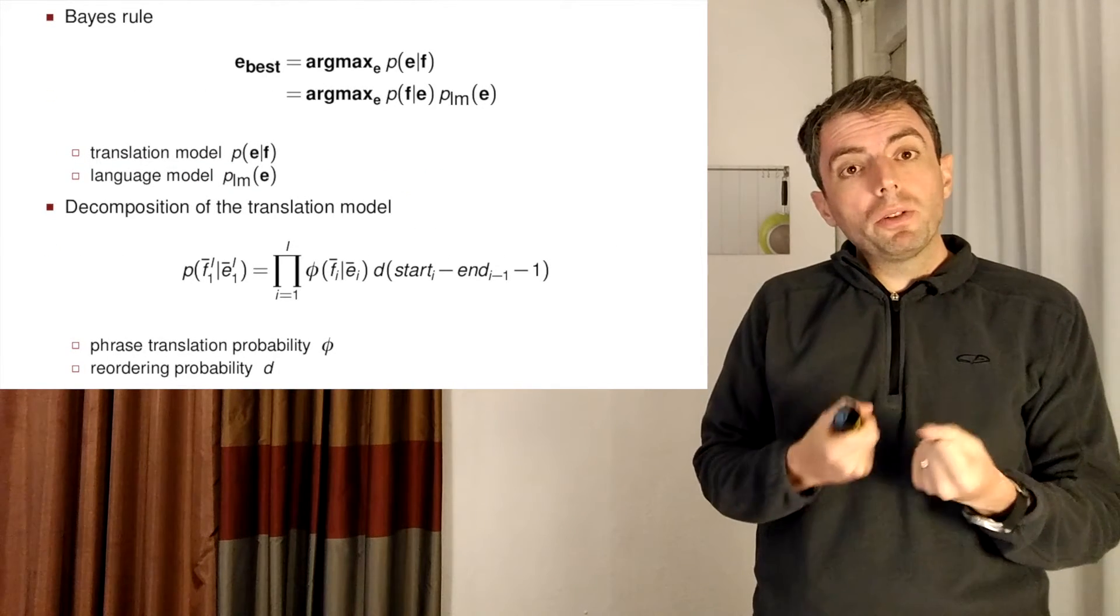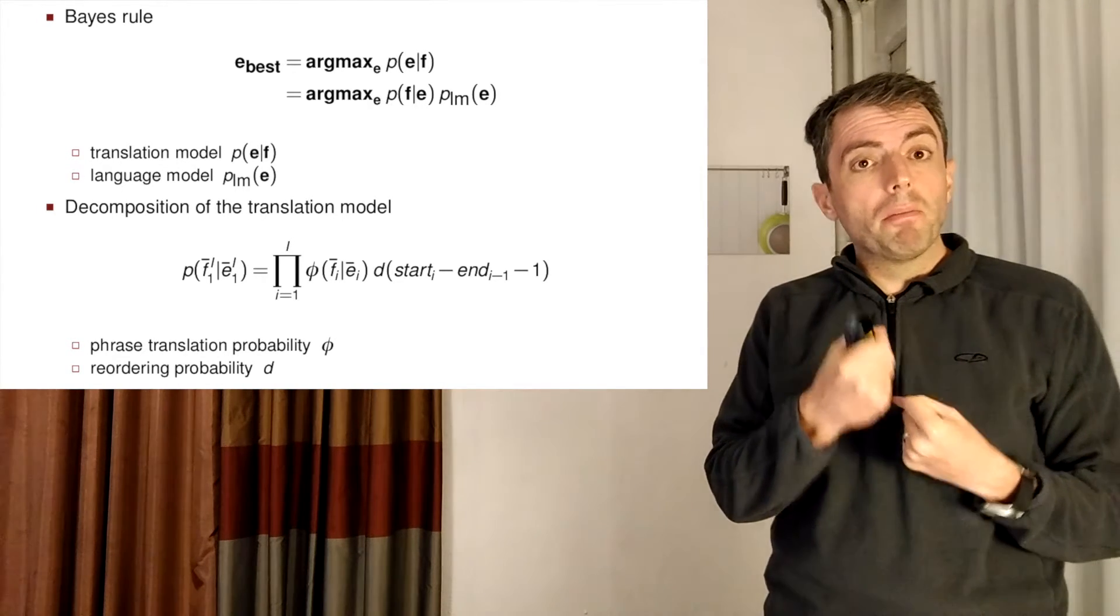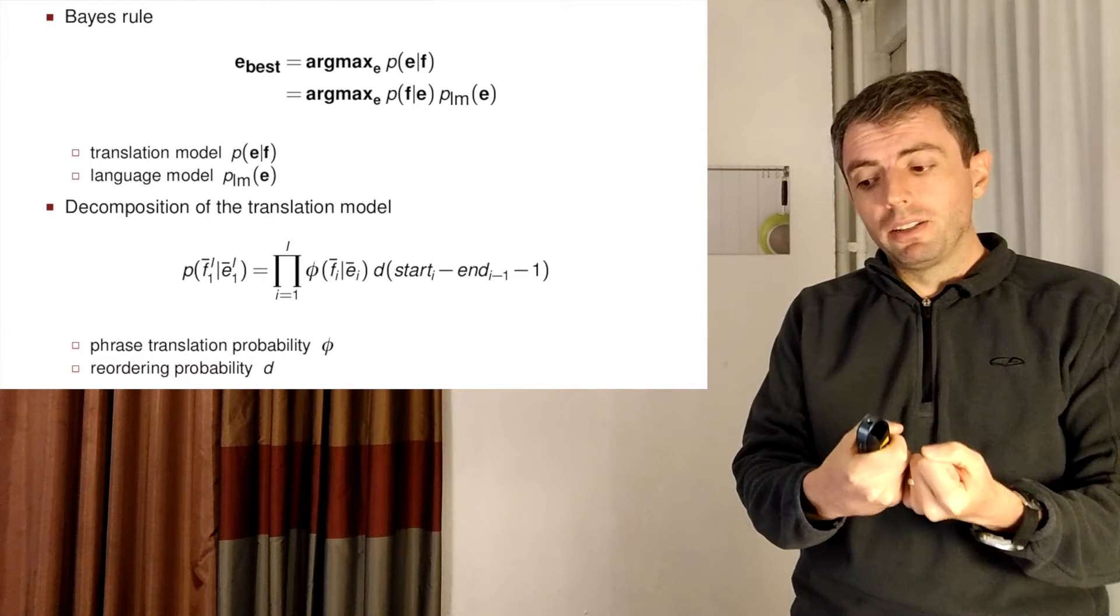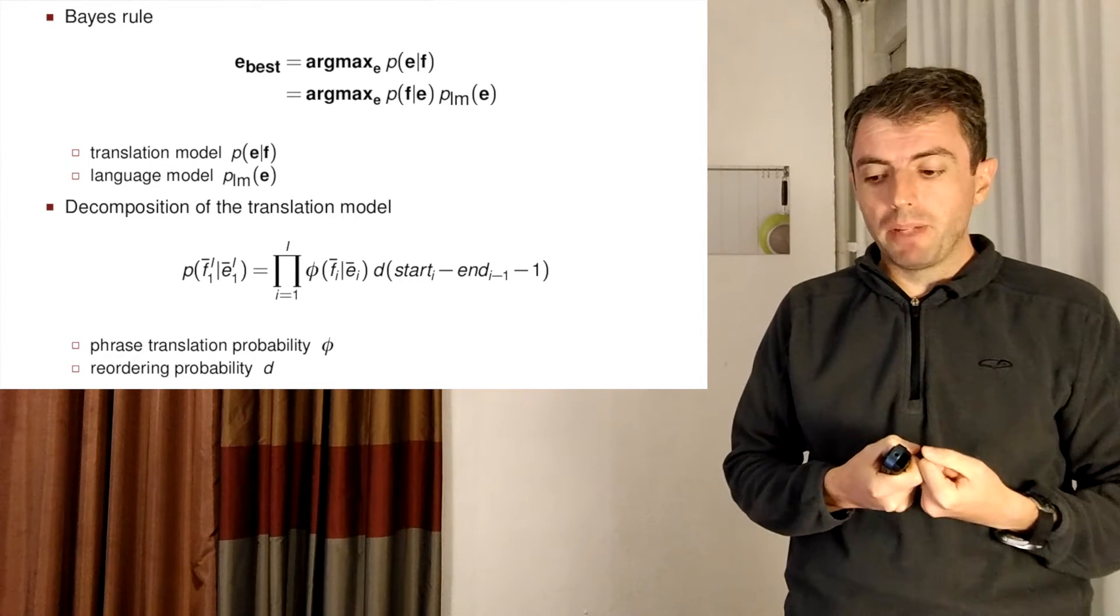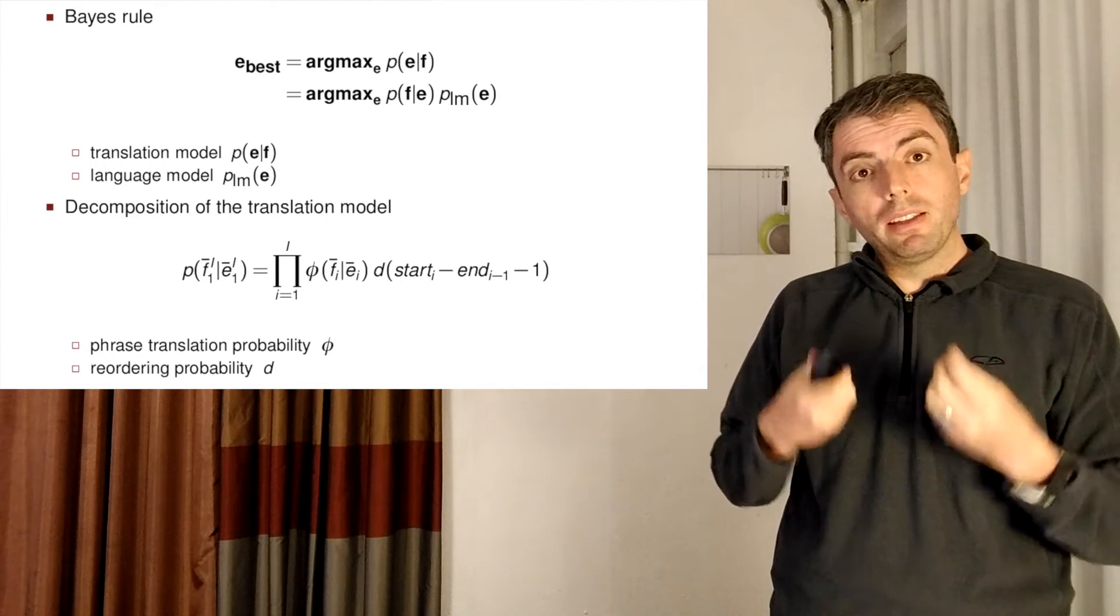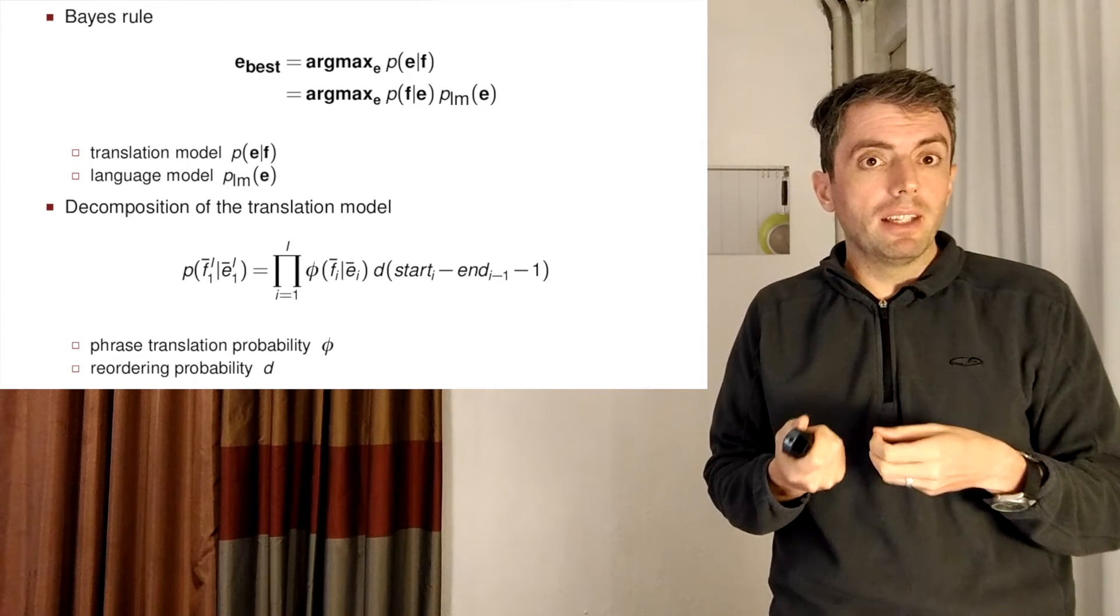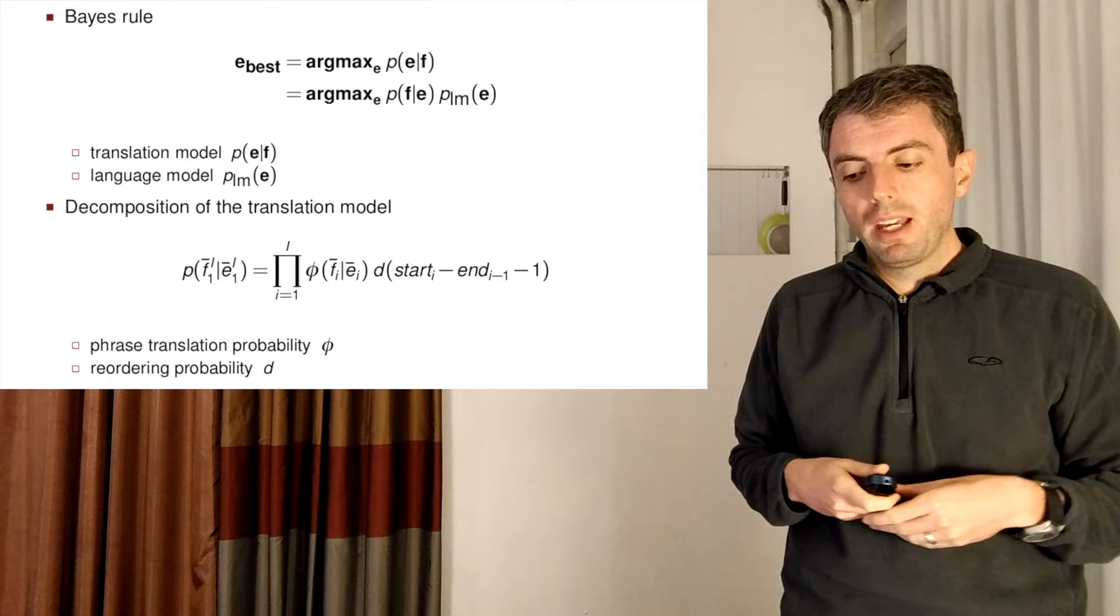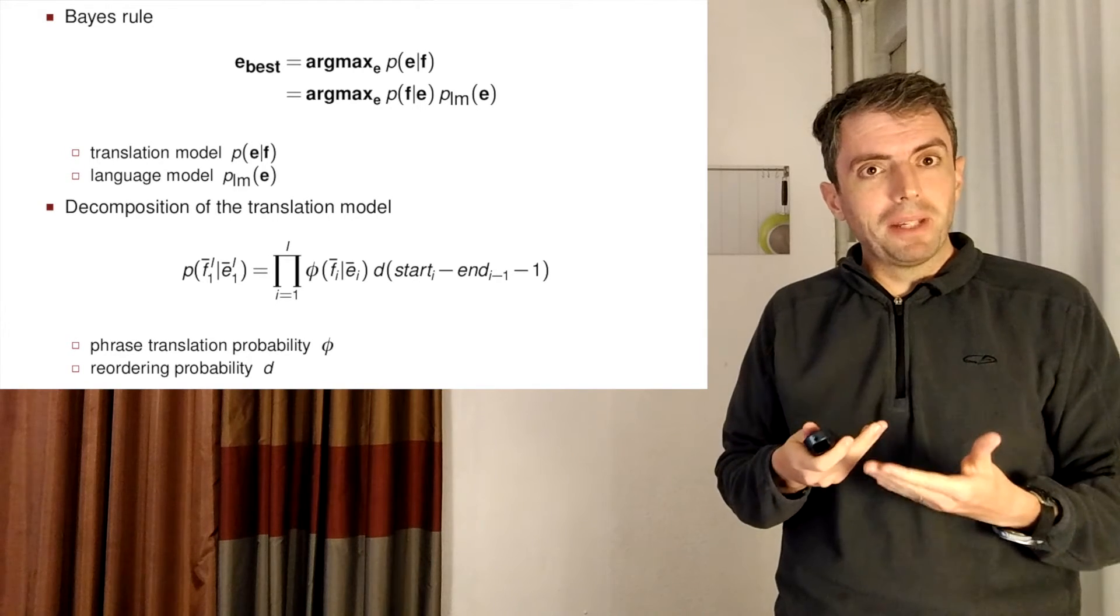So how do we actually tie this all together into a single model? The way that we do this is we combine the probability from the phrase-based translation model with the probability from a powerful language model. So this breaks down into two parts. We have the language model and we have the phrase-based translations. How do we compute the probability of a phrase-based translation?